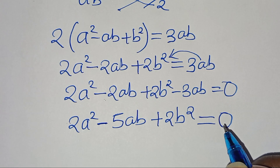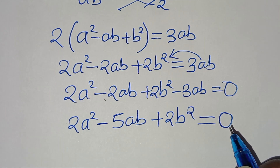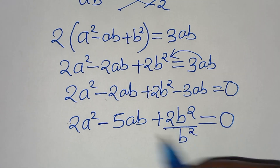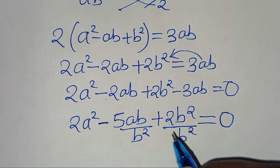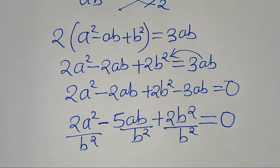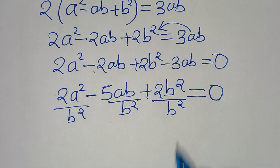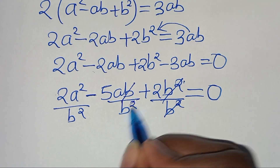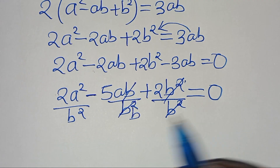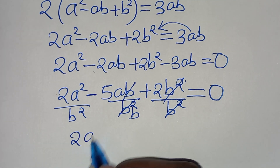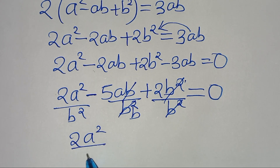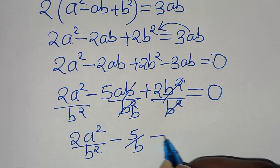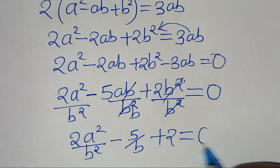Taking 3ab to the left hand side, we have 2a squared minus 2ab plus 2b squared minus 3ab, equal to 0. So now we have 2a squared minus 5ab plus 2b squared equal to 0. The next step is to divide everything by b squared.